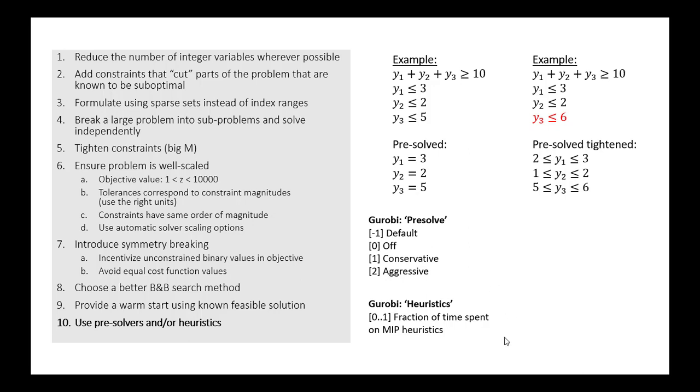Likewise, there's a heuristics in Gurobi where you can specify a target fraction of time that you'd like the solver to spend on mixed integer program heuristics. So if I were to say 0.05 as my heuristic parameter, it would target spending about 5% of the total solve time on heuristics to try to reduce the complexity of the problem. So these two are really commonly used ways to improve the solution speed.